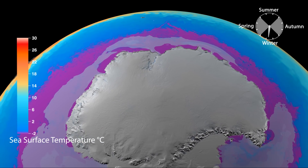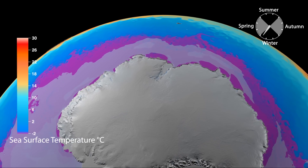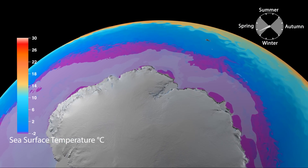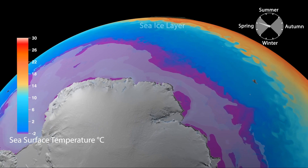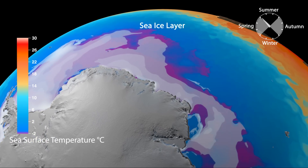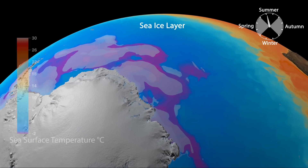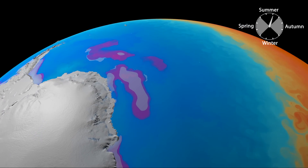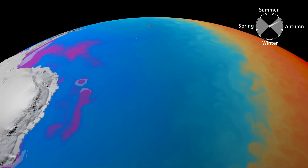A key driver of this circulation is the decrease in sea surface temperature, seen here in purple, with freezing conditions close to the Antarctic coast producing seasonal sea ice. Salt is rejected from the sea ice as it forms, leaving the remaining seawater salty, cold, and therefore very dense.